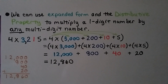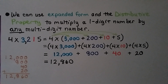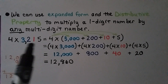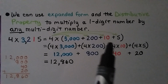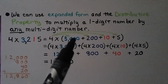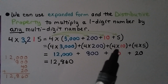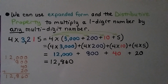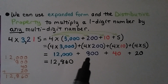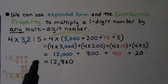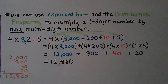We can use expanded form and the distributive property to multiply a one-digit number by any multi-digit number — even numbers in the millions. For 4 times 3,215, we expand as 3,000 plus 200 plus 10 plus 5. Distributing the 4: 4 times 3,000 is 12,000; 4 times 200 is 800; 4 times 10 is 40; and 4 times 5 is 20. We add the partial products and get 12,860.